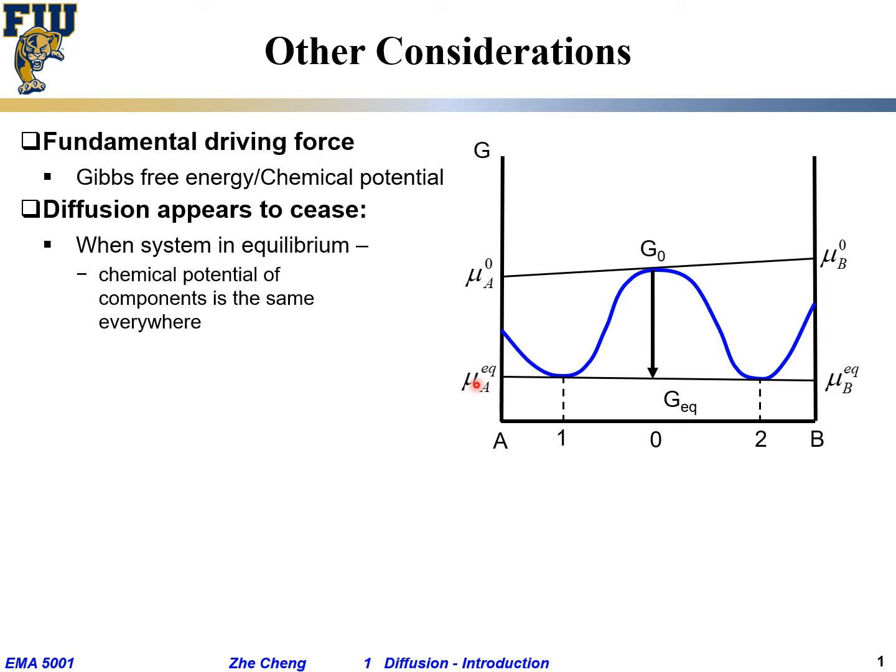Is the chemical potential for A the same as the chemical potential for B? Are these two the same? Typically no, because chemical potential is always for different elements.